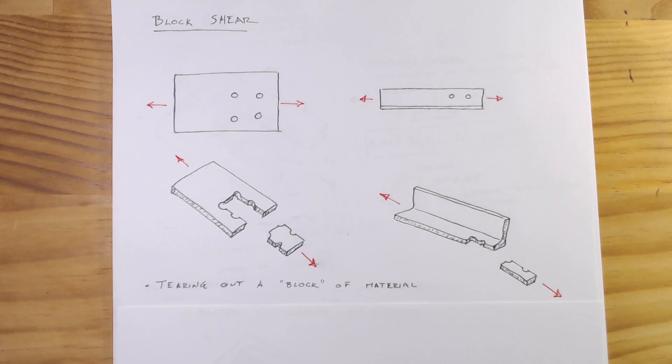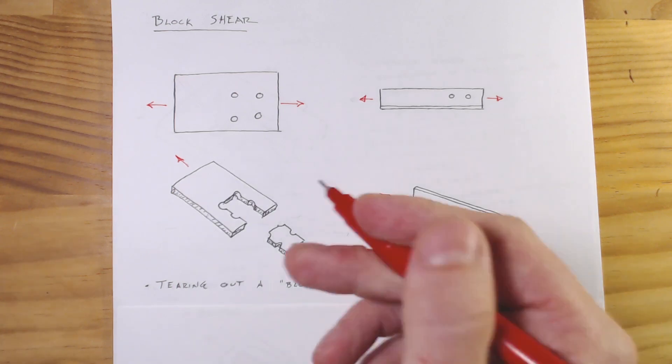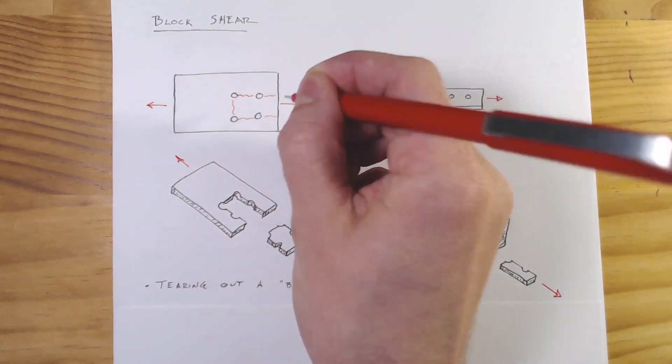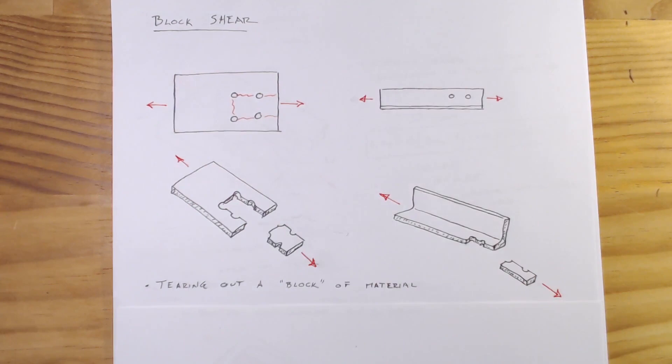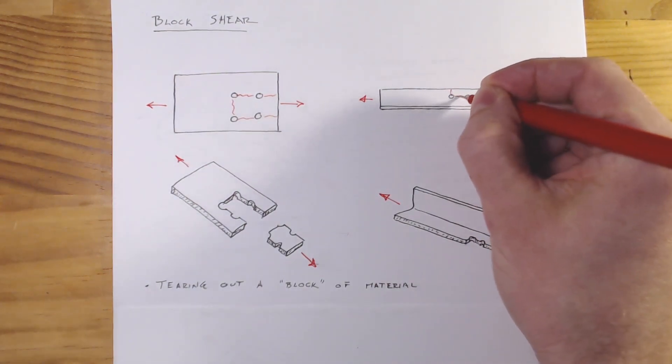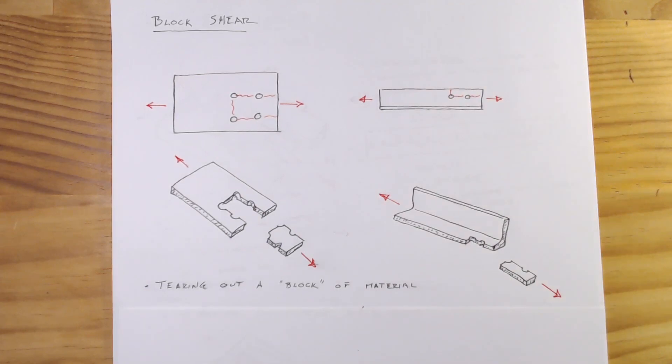What you can see from the illustrations I have here is block shear is really just this tearing out of a block of material. So whether you have a flat plate and you might be tearing out along this block within the bolts, or say that you have an angle and you're tearing out a small block just on the edge there.